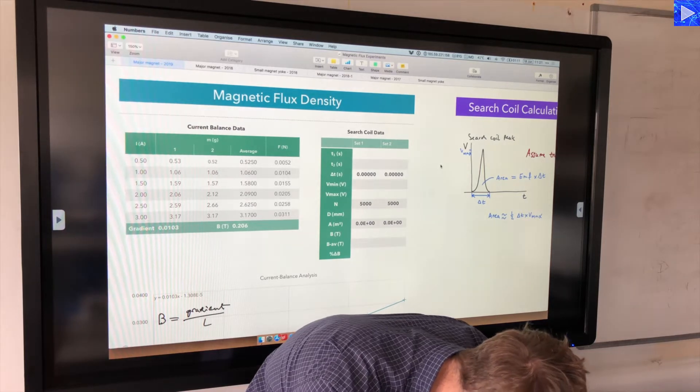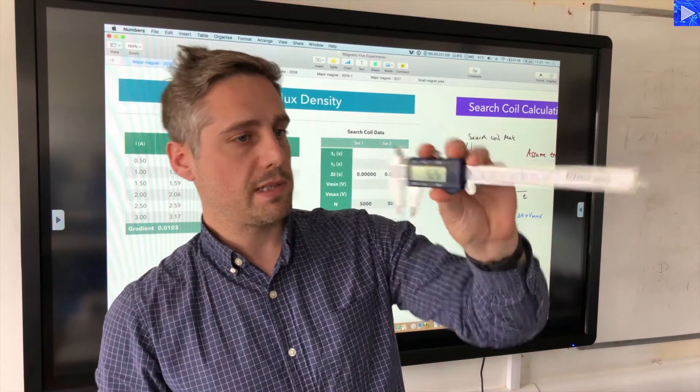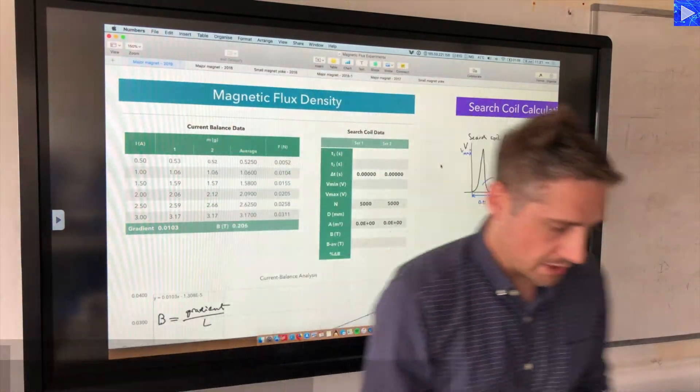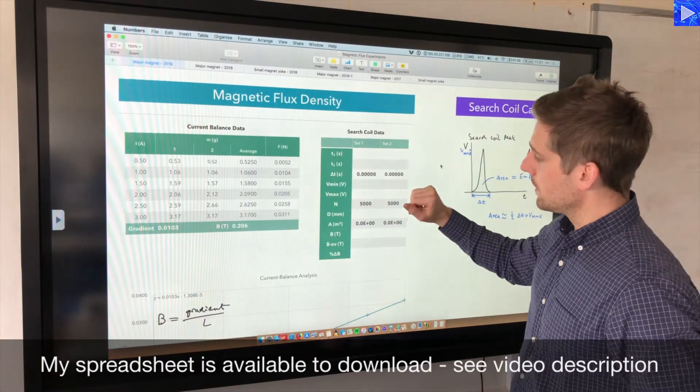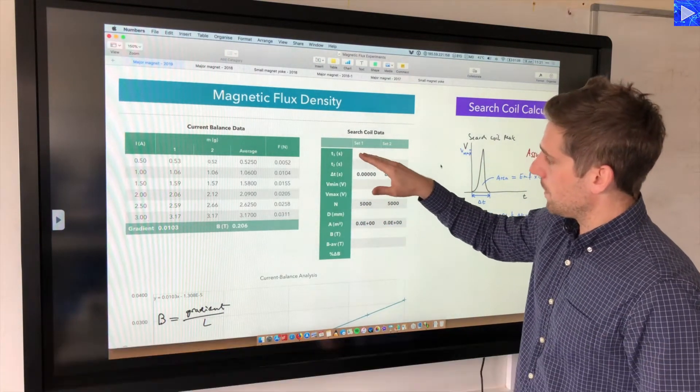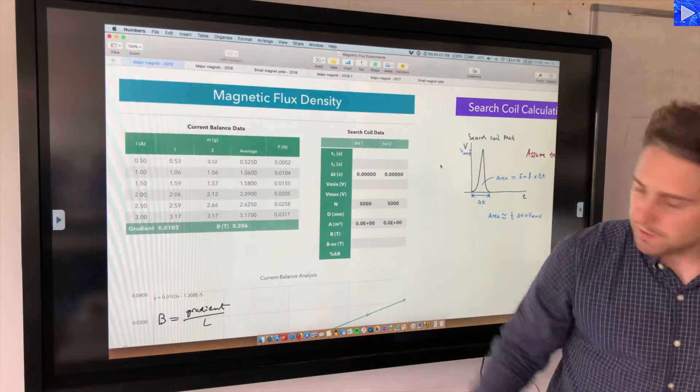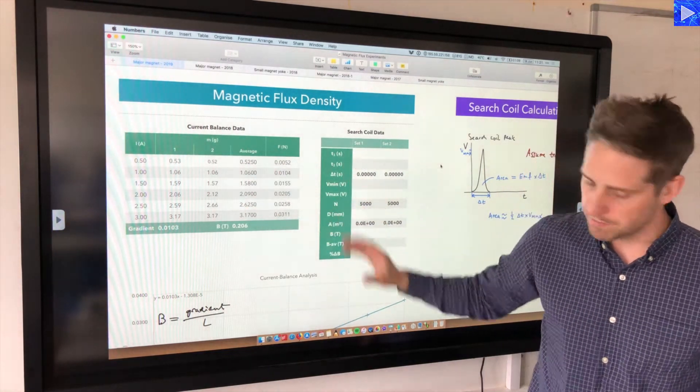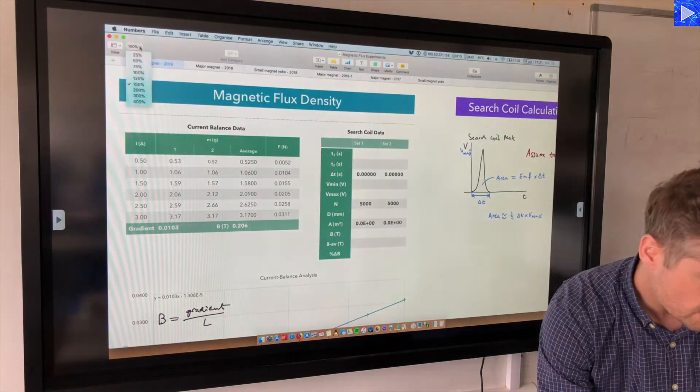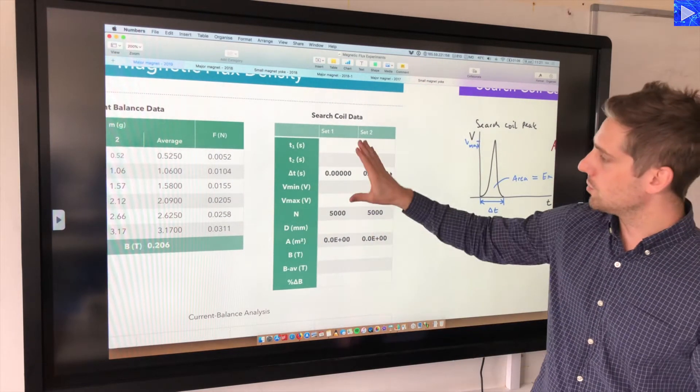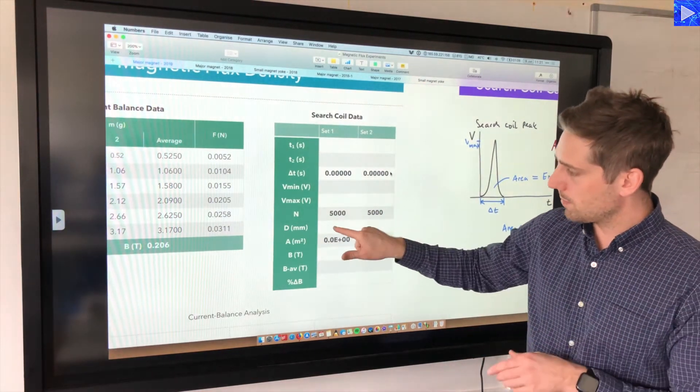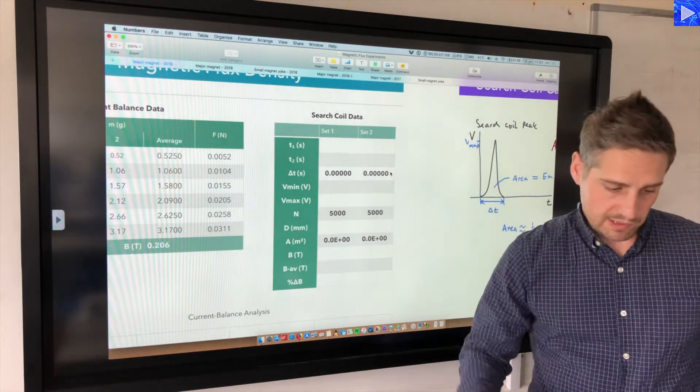So I make that 9.25 millimeters. I'm going to put that into my spreadsheet. This is the table that I'm using for the search coil data. If I zoom in, that's the current balance data I'll be comparing my results there.